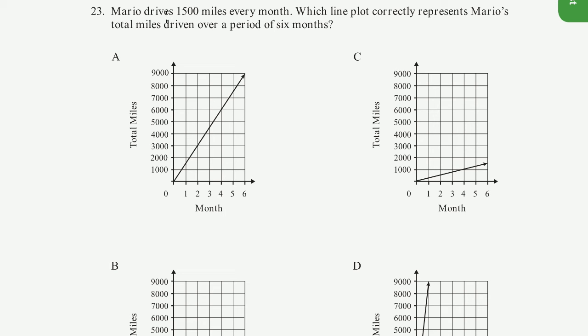Problem 23. Mario drives 1,500 miles every month. Which line plot correctly represents Mario's total miles driven over a period of six months? So it's 1,500 miles every month. So this is per month. So every month,